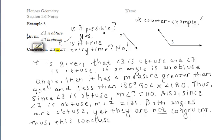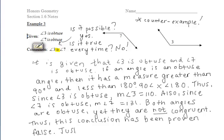Therefore, this conclusion has just been proved false. It could work sometimes if both angles had the same measure, but all we were given was that each angle is obtuse. So just because two angles are obtuse does not mean that they are congruent, as the counterexample shows.